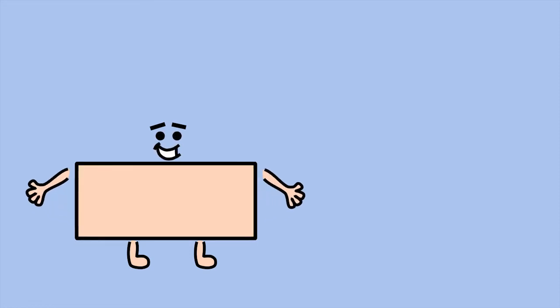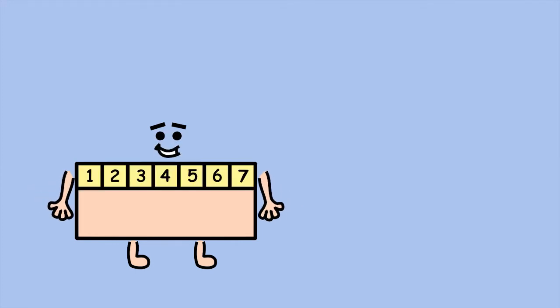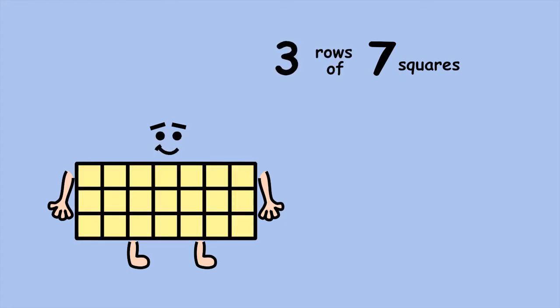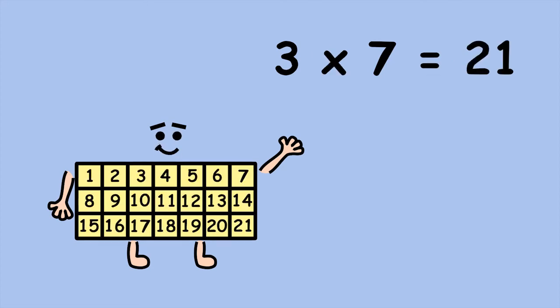If you know your times tables, there's an even quicker way of working out my area. We know each row has seven squares. Now, how many rows are there? 3. 3 groups of 7, or 3 times 7 equals 21.